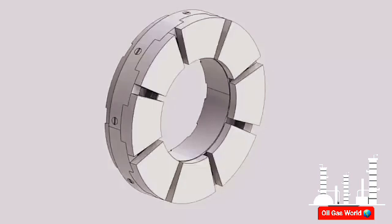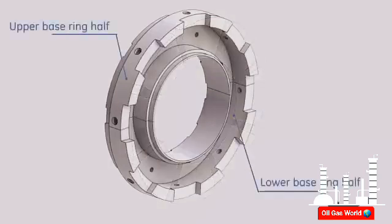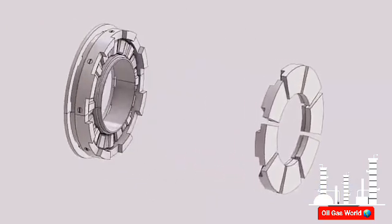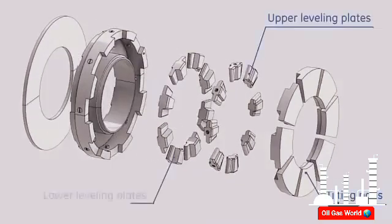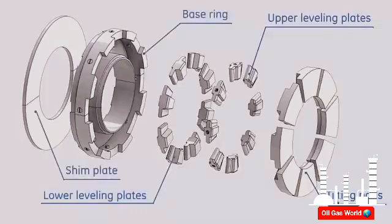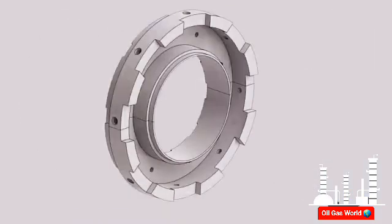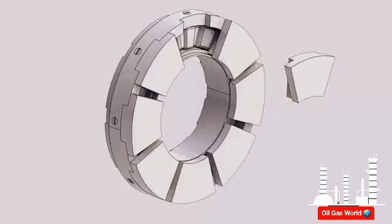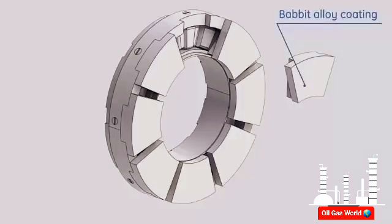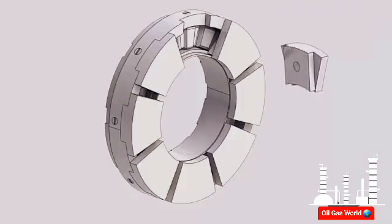The main components of this bearing are the base ring. The base ring provides support for all parts of the bearing assembly and keeps parts in the proper location. The pads are shaped like a sector of a ring. The bearing surface is covered with Babbitt alloy. Every pad has a hardened steel button on its back called the pad support. This pad support allows the pad to tilt slightly in any direction.